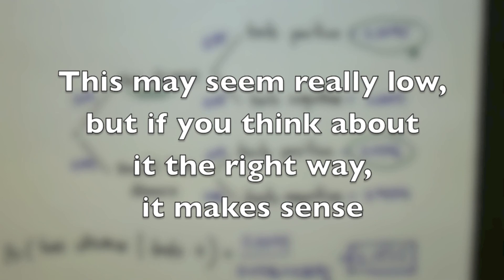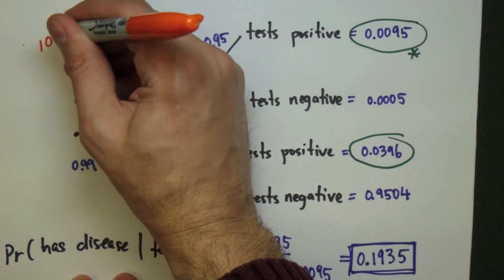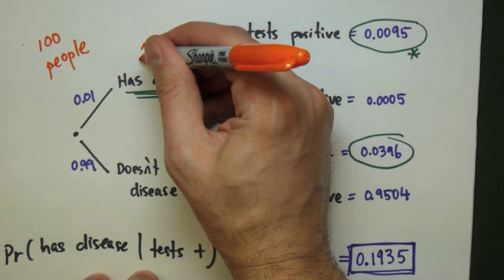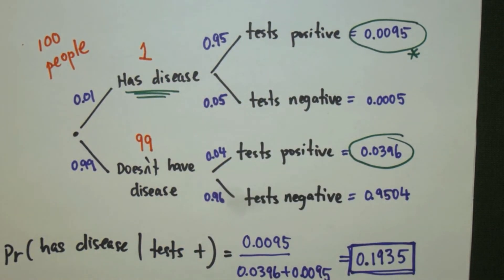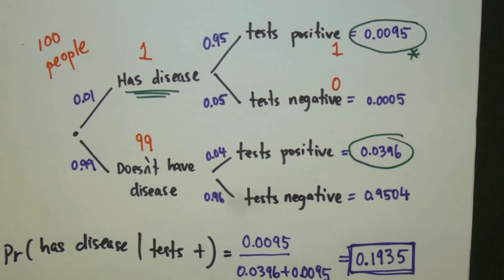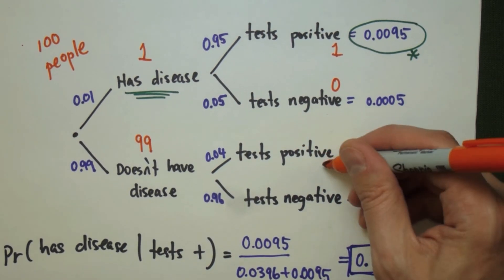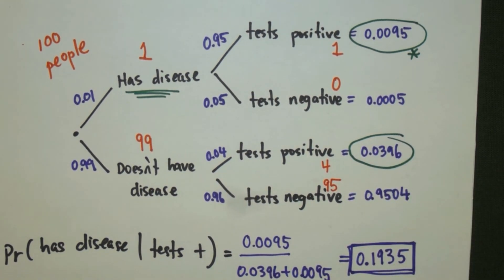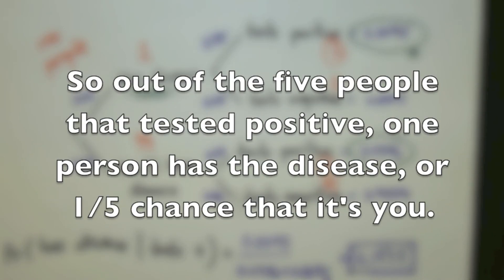This might seem really low, but if you think about it the right way, it's going to make sense. If our population only has 100 people, where would these people fit onto this tree? Only one person would have the disease and 99 people would not. Looking at the percentages we got for the different branches, that means that one person will probably have tested positive and none of them will test negative. Out of the 99, four will have tested positive and 95 will have tested negative. So five people tested positive, but only one of them actually has the disease. This means there's only about a 1 in 5 or about a 20% chance that a randomly selected person who tested positive is the person who has the disease.